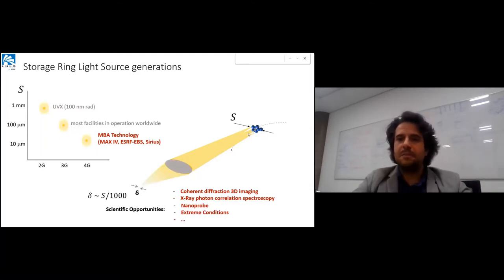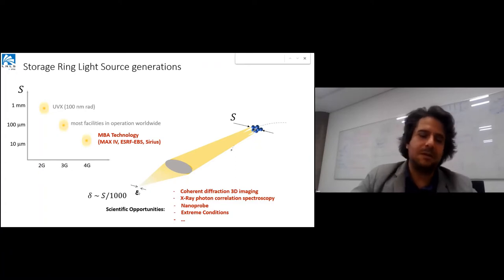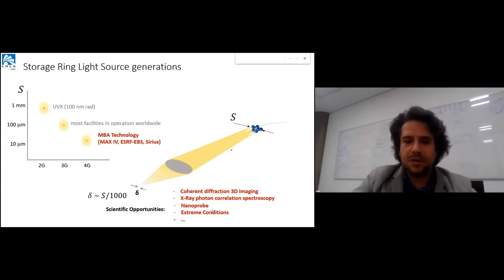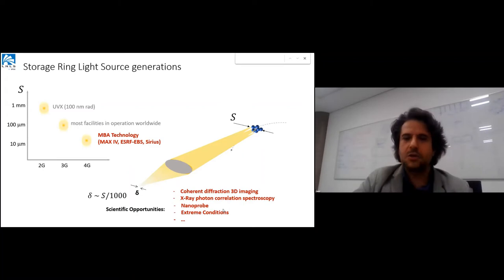Also, because the beam size is small, you can demagnify it much easier - there's proportionality between small beam size and source size. This opens possibilities for nanoprobes, extreme condition environments where you have tiny environments and need to penetrate with a small beam and very low divergent beam for diffraction.